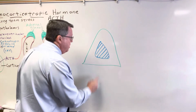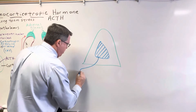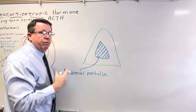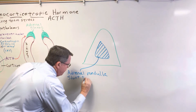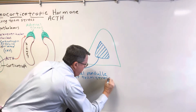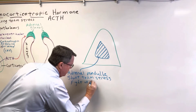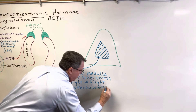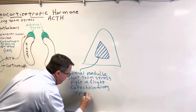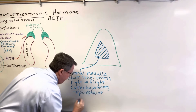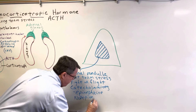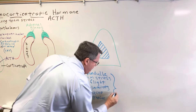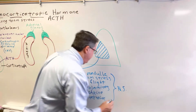I have the middle part here, and we're going to call this the adrenal medulla. The adrenal medulla is going to be responsible for short-term stress, also known as fight-or-flight. This is going to release hormones that fall under the category of catecholamines. The main hormones it's going to release are epinephrine and norepinephrine. ACTH doesn't have anything really to do with these — these are going to be controlled by the nervous system.